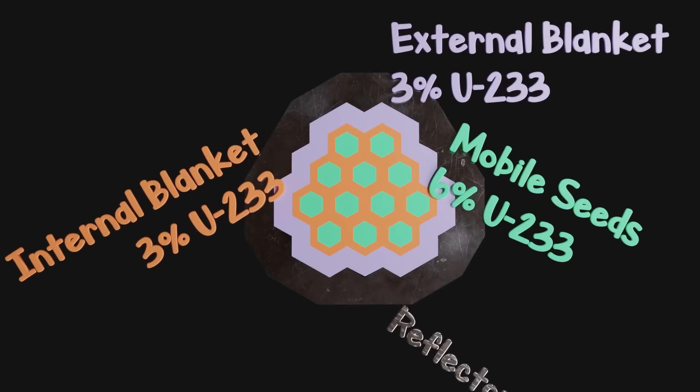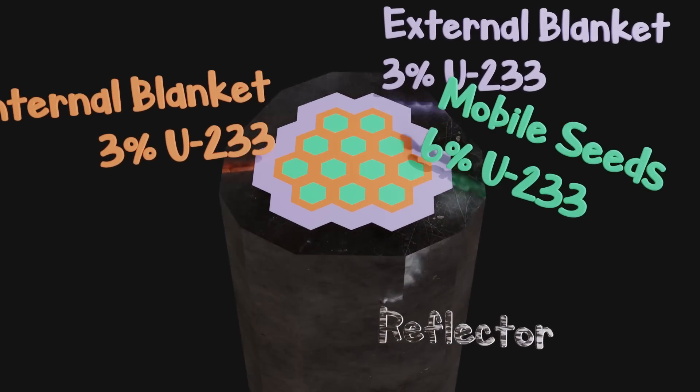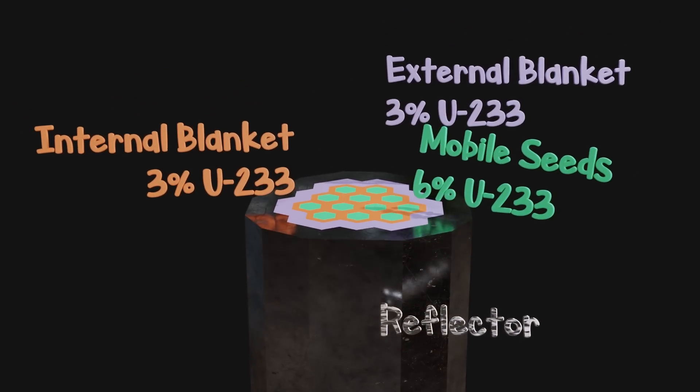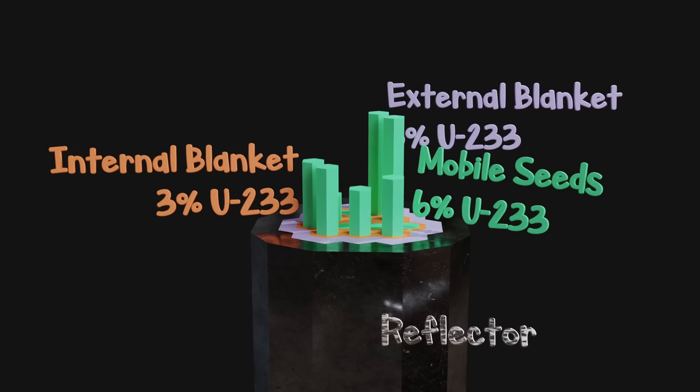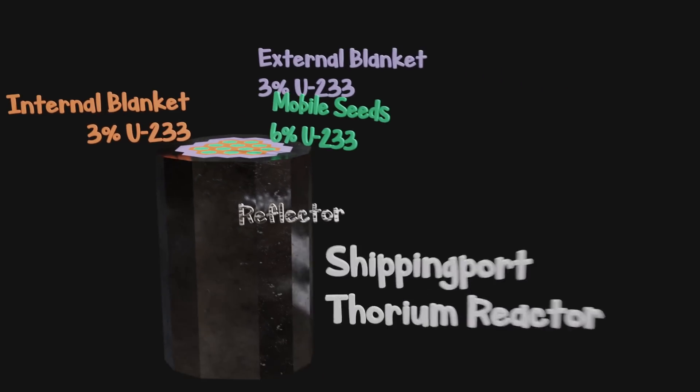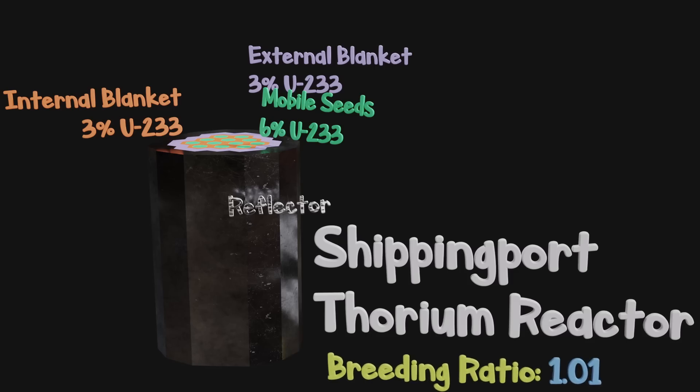There are some clever ways of arranging the fuel in the core which isolates the thorium further, or one can physically remove or rearrange cores to increase transmutation. The Shippingport reactor experiment achieved a breeding ratio of 1.01. But this isn't as economically lucrative as one would hope.